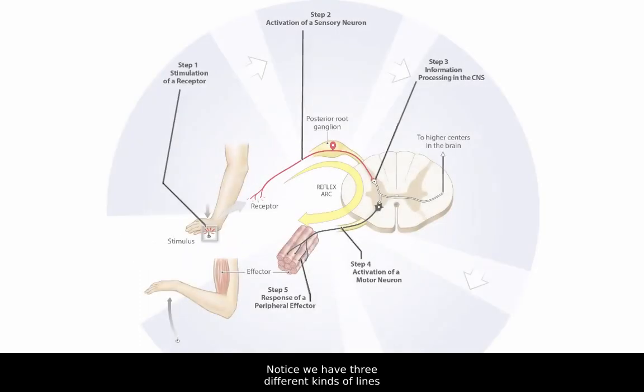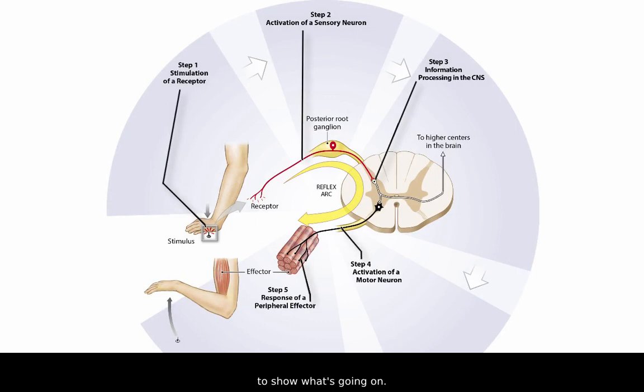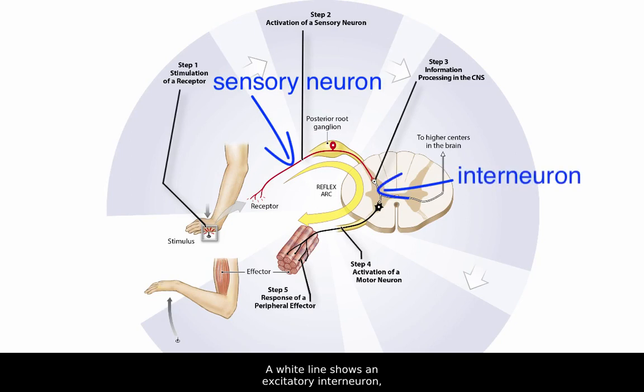Notice we have three different kinds of lines to show what's going on. A red line is a stimulated sensory neuron, a white line shows an excitatory interneuron, and a black line shows a stimulated motor neuron.